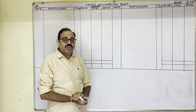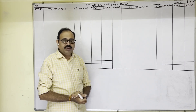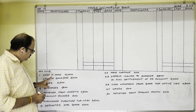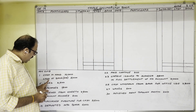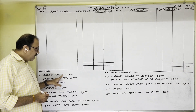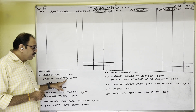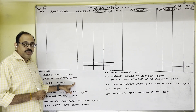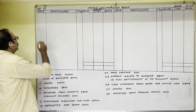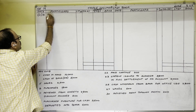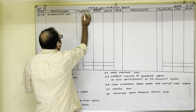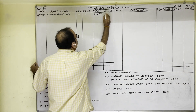Now we will write the opening balances for the 19th problem. 1st November 2018: cash in hand 10,000 rupees, cash at bank debit balance 5,000 rupees. Cash in hand is an asset and cash at bank debit balance is also an asset. These two are opening balances, so they go on the debit side. Write 'balance brought down': in the cash column 10,000 rupees, in the bank column 5,000 rupees.